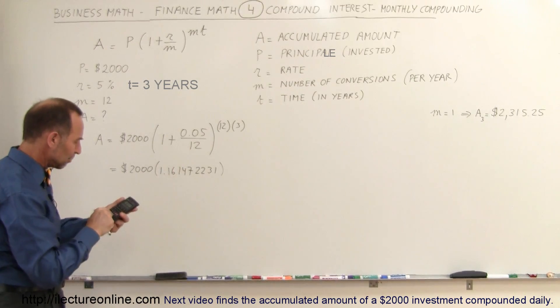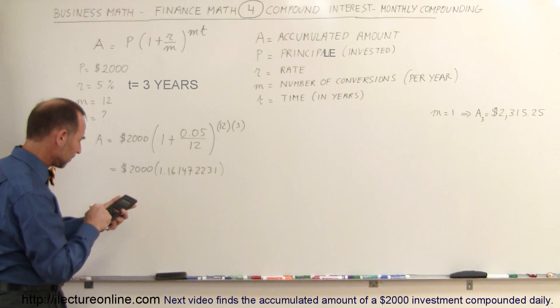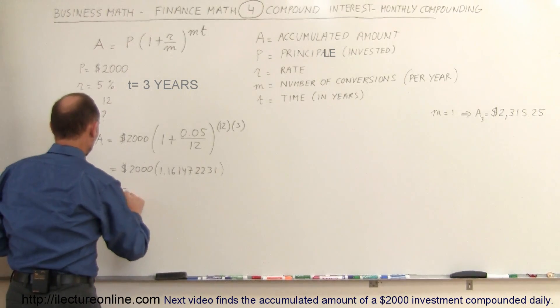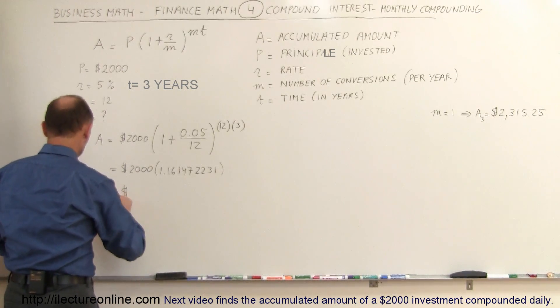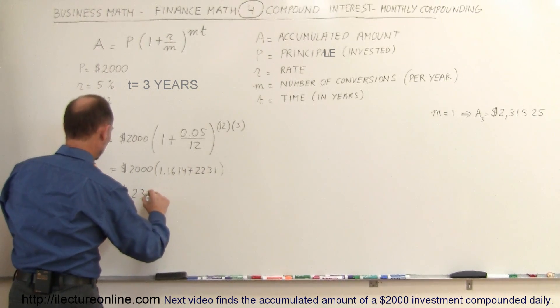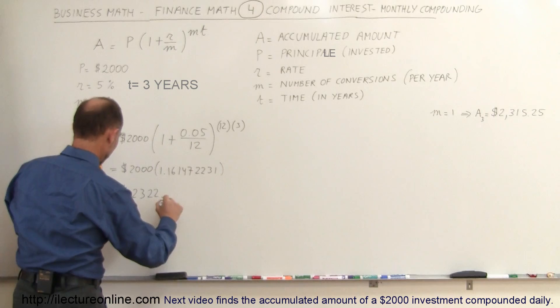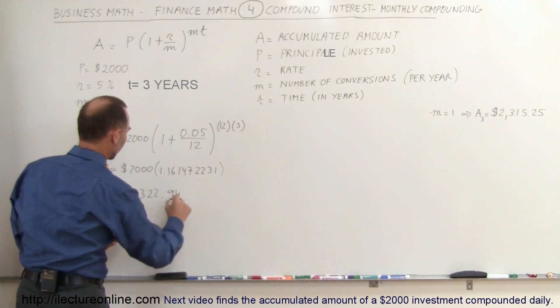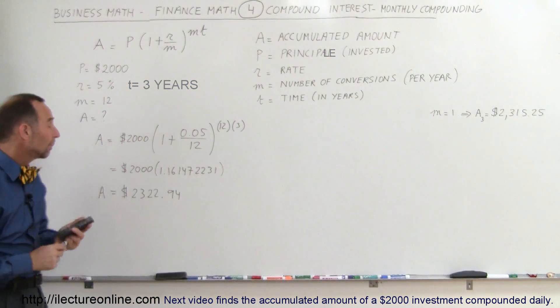If we then multiply times 2,000, we get a total amount accumulated, A, to be equal to $2,322.94. So we usually round that to the nearest penny.